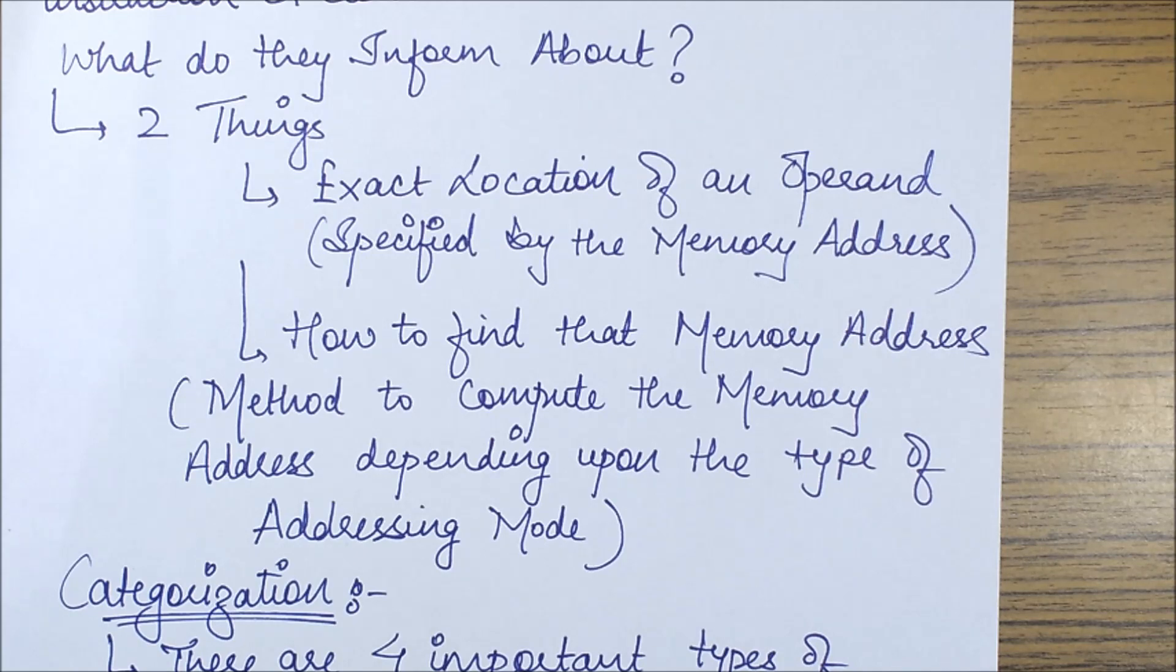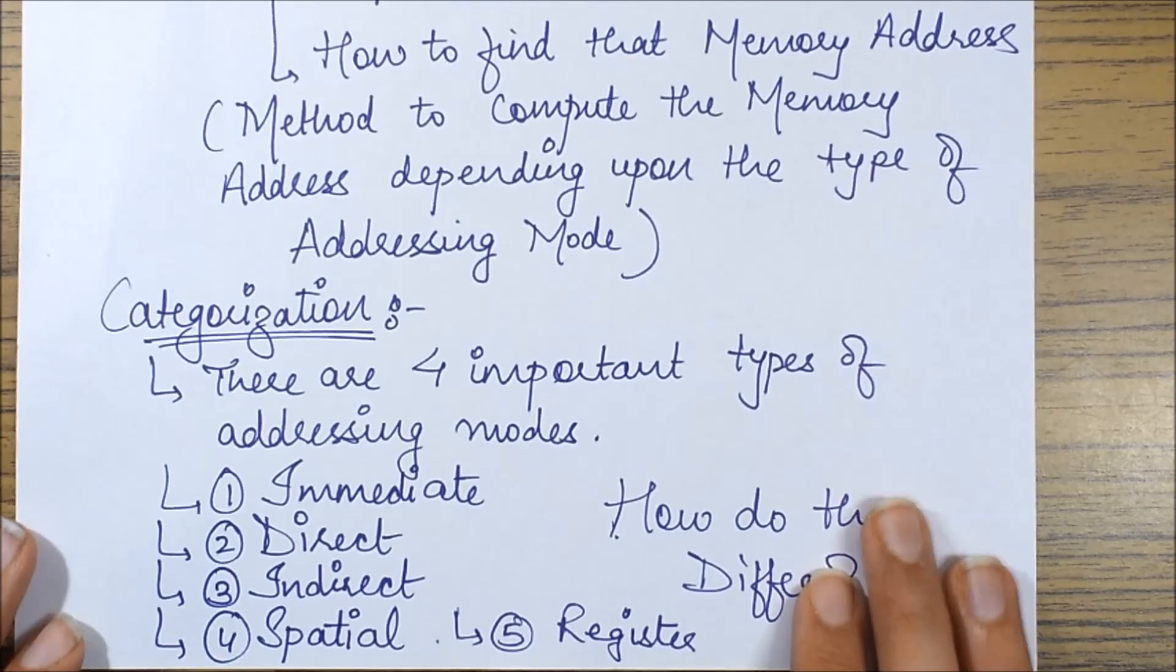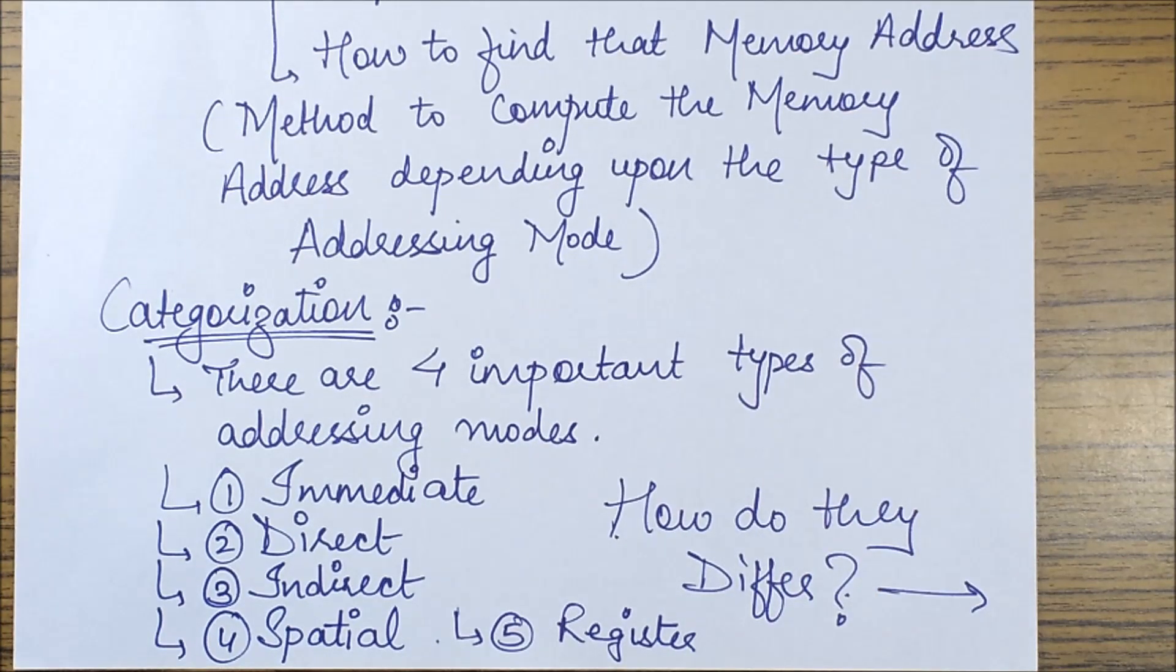So next let's see what is the categorization. The broad categorization of various addressing modes is as follows. We can broadly categorize them to these five types: they are immediate, direct, indirect, spatial, and register.